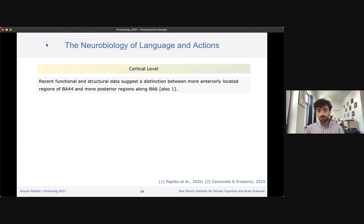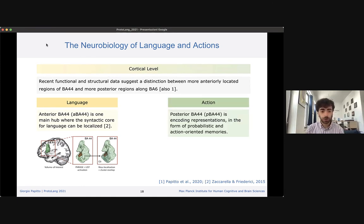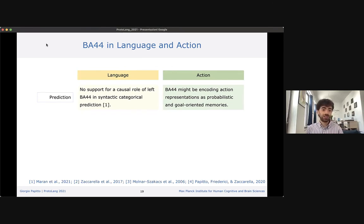At the cortical level, I'd like to suggest that the anterior and posterior portions of BA44 are involved in different types of processes. Anterior BA44 is where the simpler syntactic operations of merge can be localized, while posterior BA44 could be a sub-region encoding this action-oriented probabilistic representation to be sent later to the premotor cortex for action execution. In the action domain, this area might be involved in encoding probabilistic representations of action. There is no support for a causal role of the area in syntactic categorical prediction. This would also be a divide between the roles played by these two sub-regions in two domains.